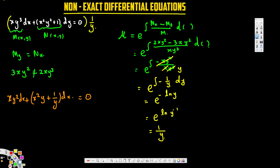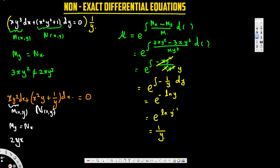Now let's verify this is an exact differential equation. This is our new M and new N(x,y). We take the partial derivative of M with respect to y and N with respect to x to check equality. The derivative of M = xy² with respect to y is 2xy. The derivative of N = x²y + 1/y with respect to x is 2xy, and the 1/y term becomes 0 since y is treated as a constant.